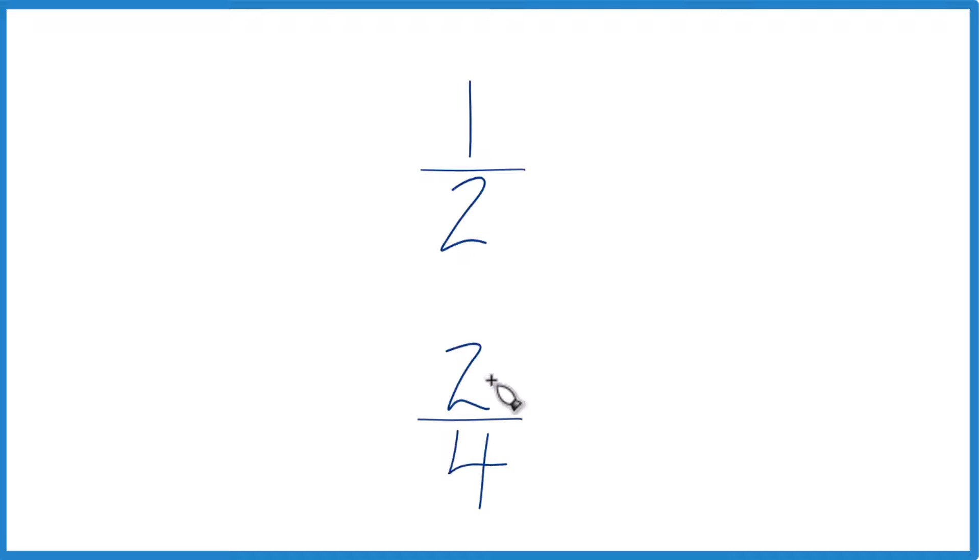First, it might be useful to simplify two-fourths, because they're both even numbers. So divide two by two, you get one. Four divided by two is two. And you can see that one-half and one-half, they're the same. So one-half is actually equal to two-fourths.